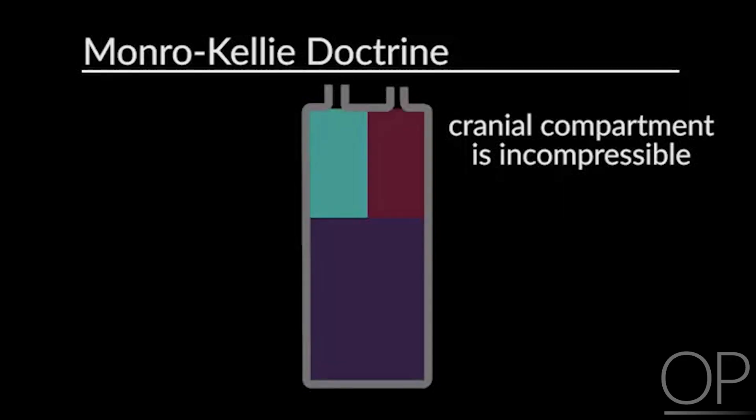The first topic is the principles behind brain swelling in terms of the Monroe-Kelly doctrine. This doctrine states that the cranial compartment is incompressible, so the volume inside is fixed. There are three things inside the cranium that make up its volume: brain tissue, blood, and CSF. Because the volume is fixed, these three things maintain an equilibrium such that when the volume of one component increases, the volume of another decreases.